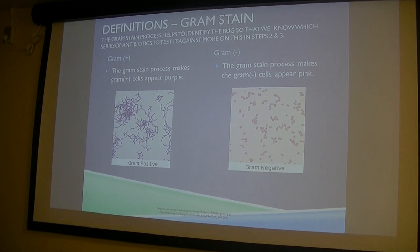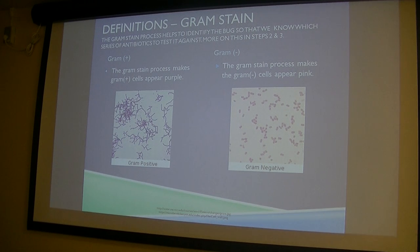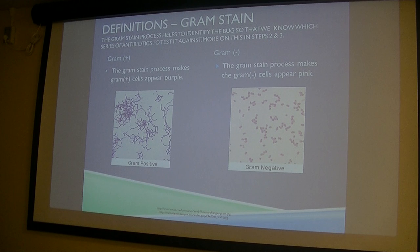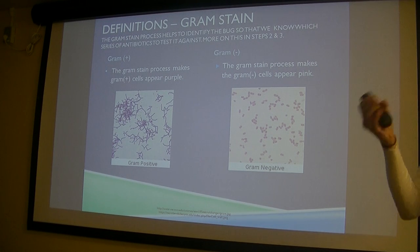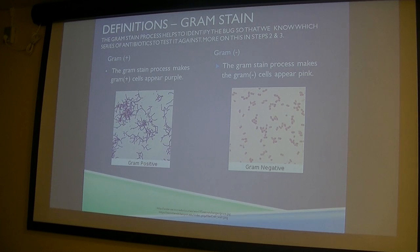The gram stain is helpful because we may not get a full culture result quickly — you have to grow the bacteria out in the microbiology lab. But the gram stain can tell you right away which class of antibiotics to start. I've seen situations this past month where the gram stain came back gram-negative and all we had on board were gram-positive drugs. That's not useful to anybody. If it's been a long time since you've looked up cultures on your patients, please start doing that.